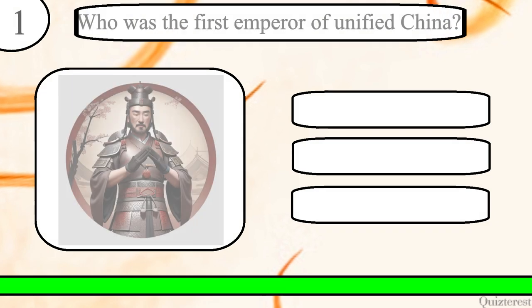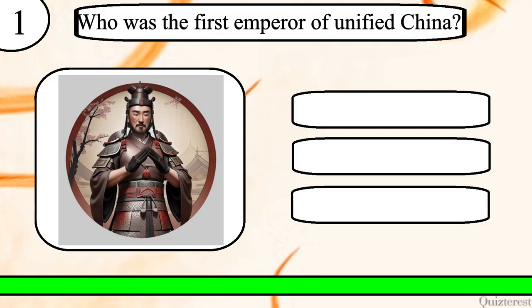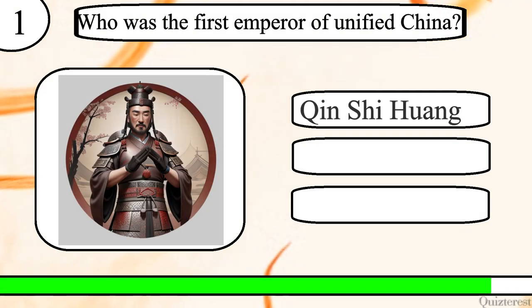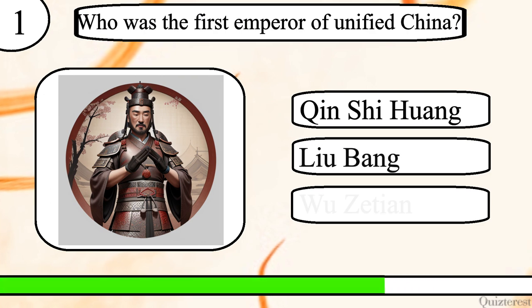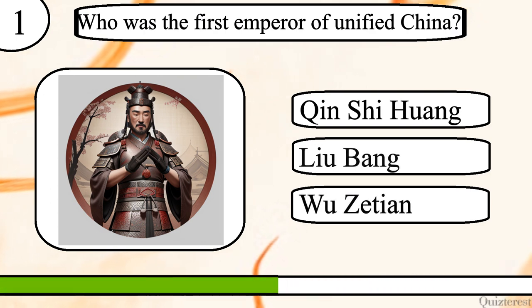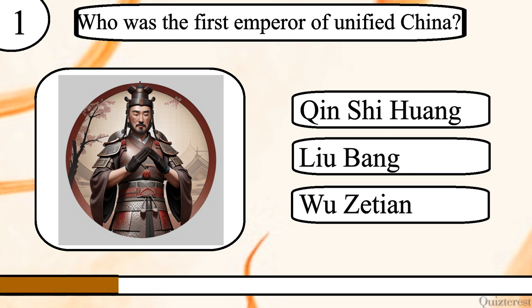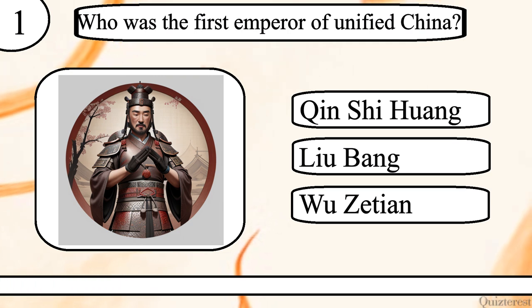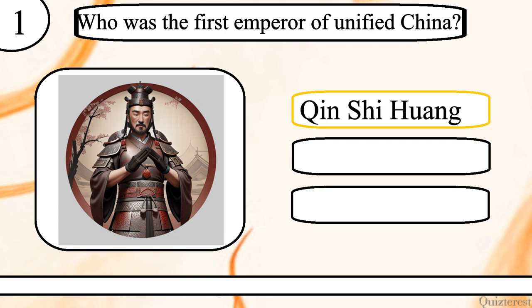Question 1. Who was the first emperor of Unified China? Qin Shi Huang, Liu Bang or Wu Zetian? The correct answer is Qin Shi Huang.